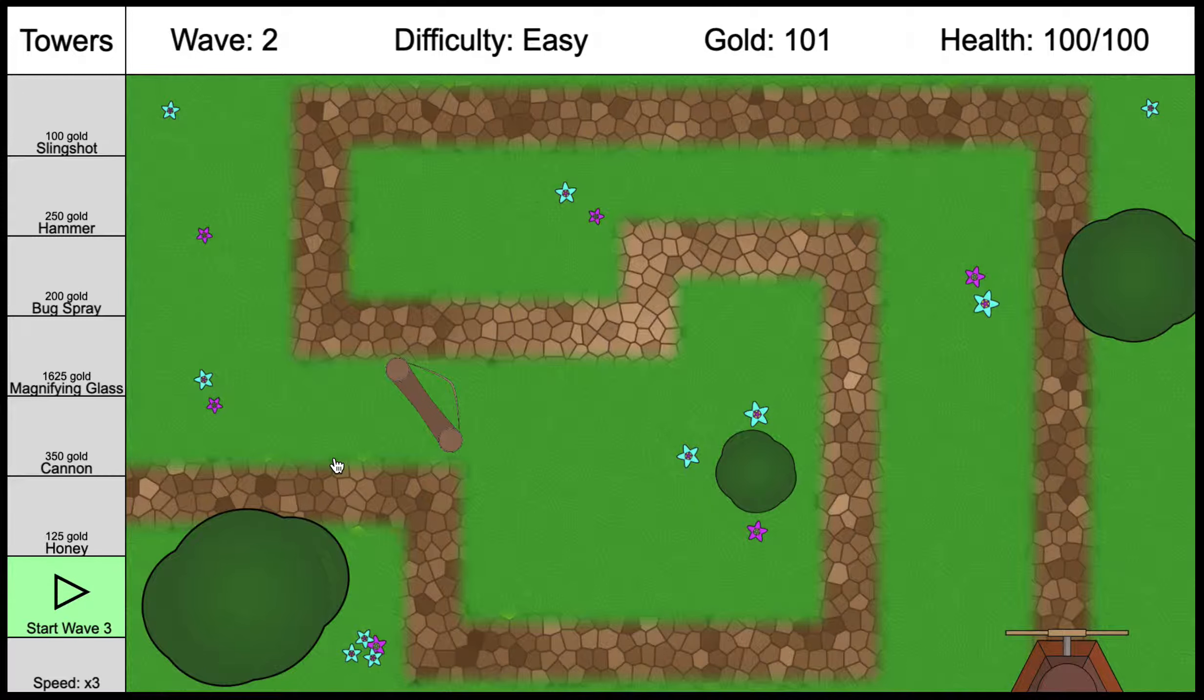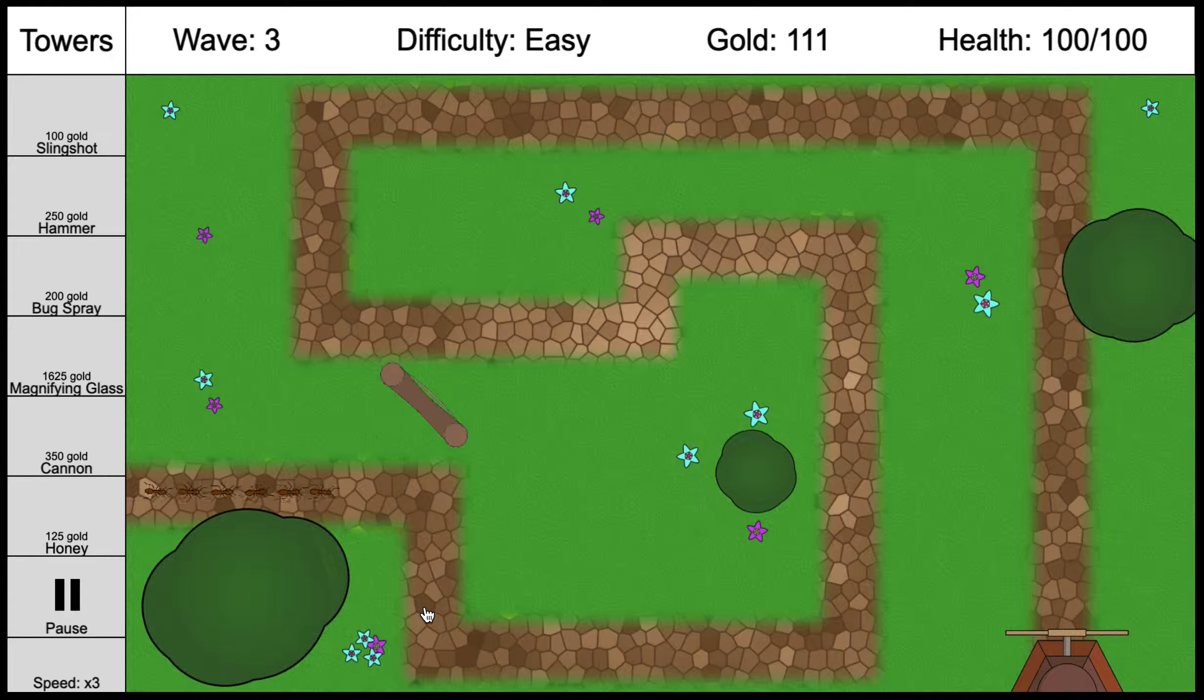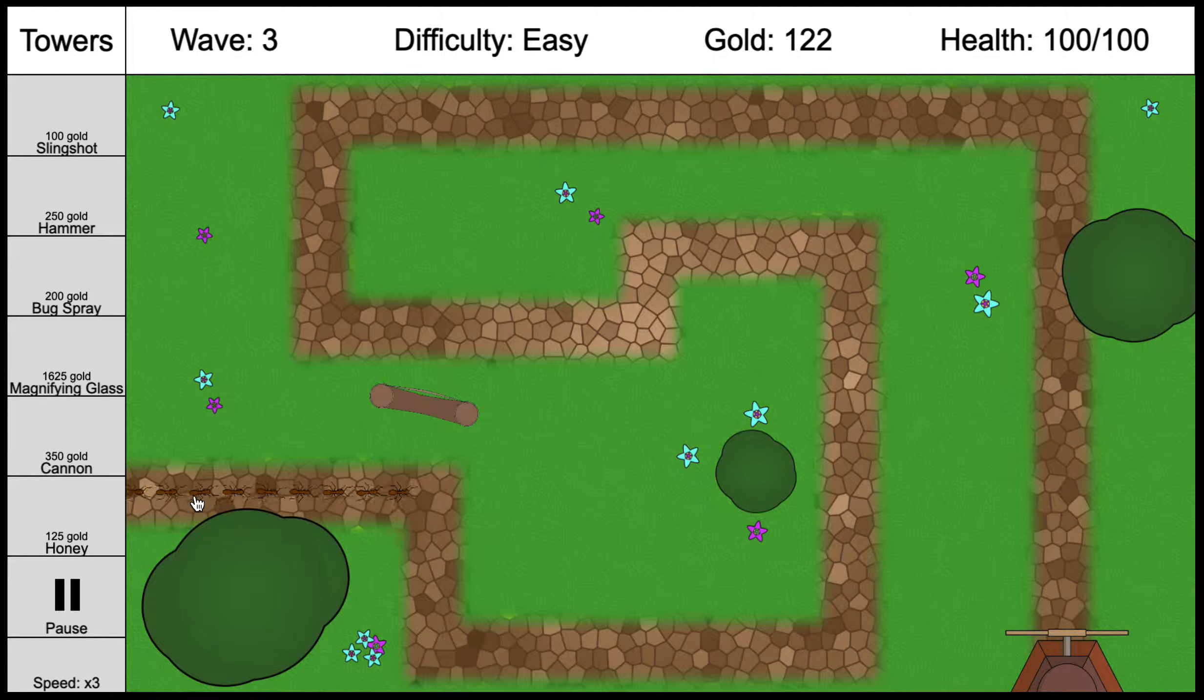So now wave two is done. We have 101 gold, so we can pop another slingshot in there if we want. Let's wait, and I'll put a honey one in so you can have an idea what that one does just after this wave here. It's the next wave. The waves do get progressively harder. As you can see, they're getting closer together, so they start getting pretty close to one another and come in bigger packs and different hit points and styles and speeds.